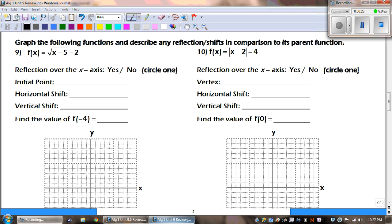Number 9 says f of x equals the square root of x plus 5 minus 2. So before we start talking about any of this, we need to know what type of function is this. Do you guys know? You should be saying that this is a square root.